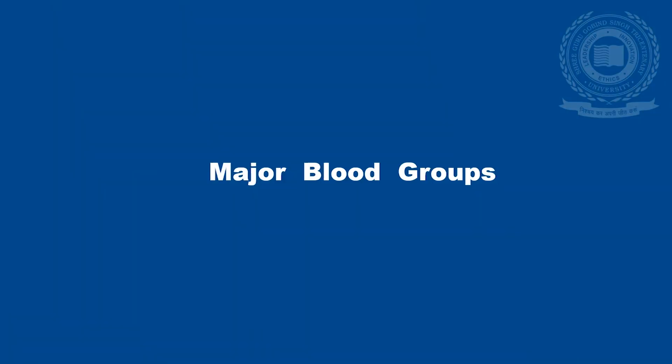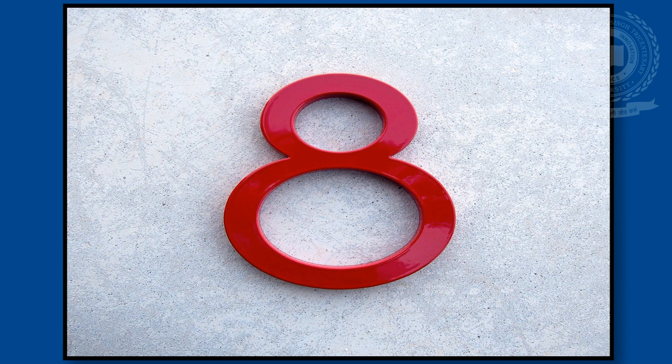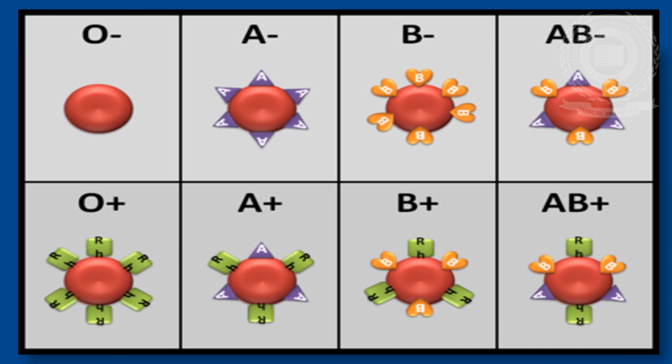On the basis of presence or absence of antigens A and B, the blood groups are of four types. Further, the presence or absence of Rh factor makes these blood groups of eight types: O negative, O positive, A negative, A positive, B negative, B positive, AB negative, and AB positive.